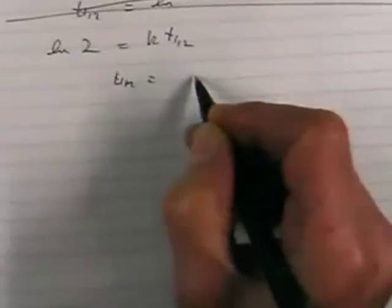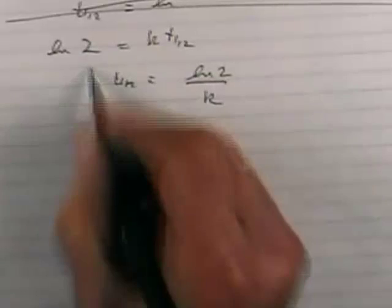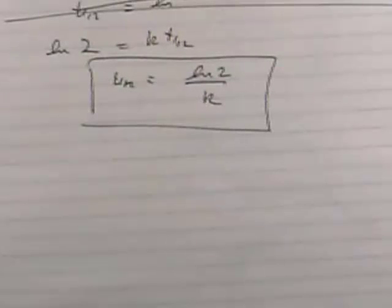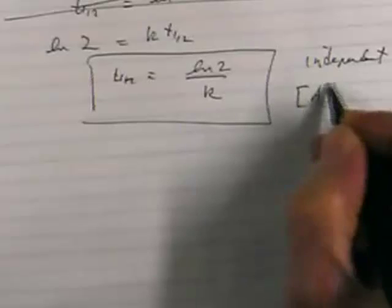The half-life is equal to log of 2 divided by k, independent of initial concentration.